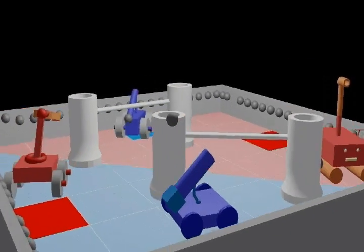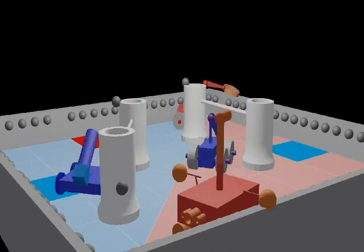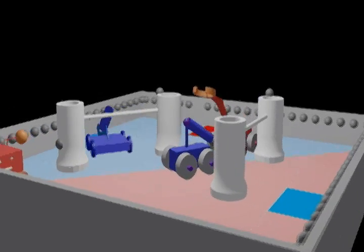Balls scored on the rims of these goals are worth 1 point. Balls scored into the goals are worth 3 points each. Hanging from the bar at the end of the match is worth 5 points.